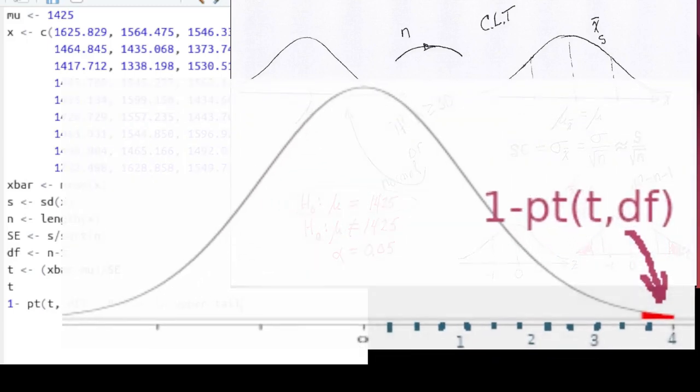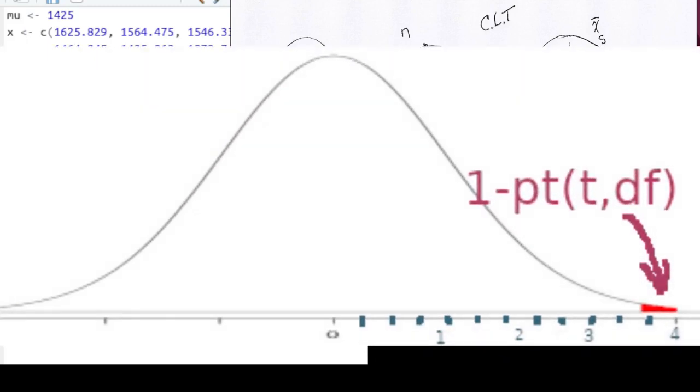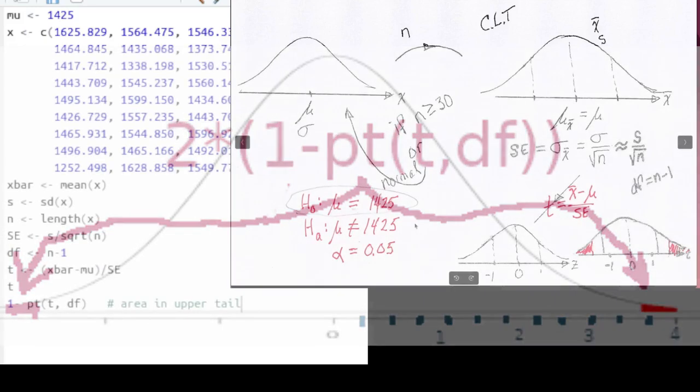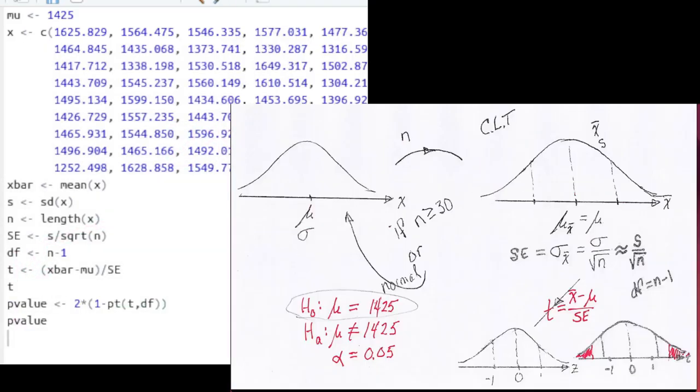1 minus pt of t is going to be the area in that upper tail, and because t was positive, I needed to find that area in the upper tail. But my p-value will actually be 2 times that because I'm doing this two-tailed test. So there's the correct calculation of the p-value for this two-tailed test.